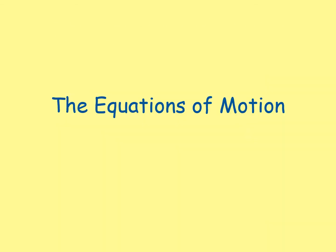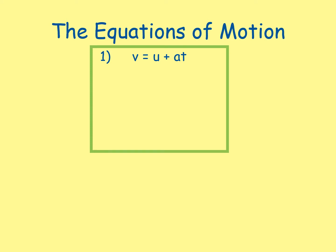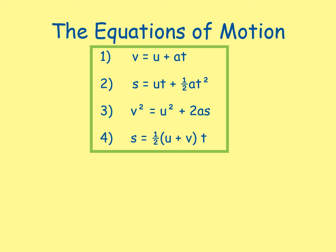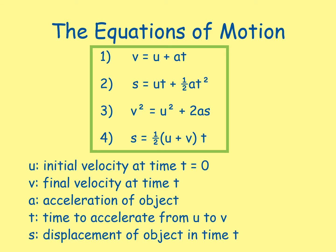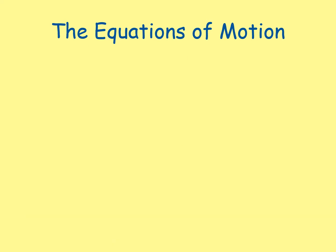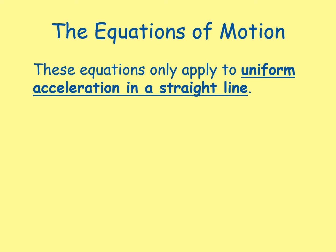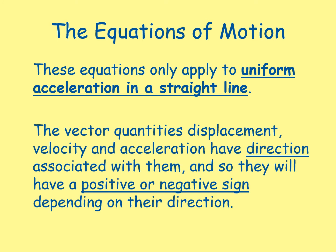The equations of motion are: v = u + at; s = ut + ½at²; v² = u² + 2as; and s = ½(u + v)t. Where u is the initial velocity at t = 0, v is the final velocity at time t, a is the acceleration, t is the time to accelerate from u to v, and s is the displacement of the object in time t. These equations only apply to uniform acceleration in a straight line. The vector quantities displacement, velocity, and acceleration have direction associated with them, so they will have a positive or negative sign depending on their direction.